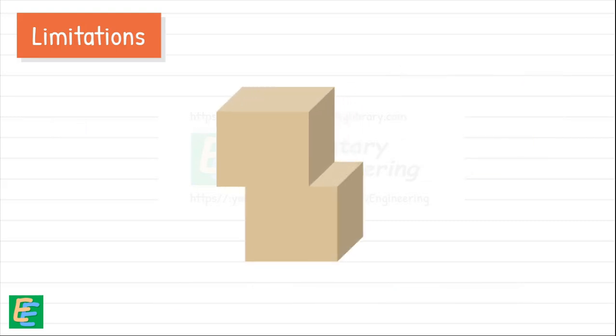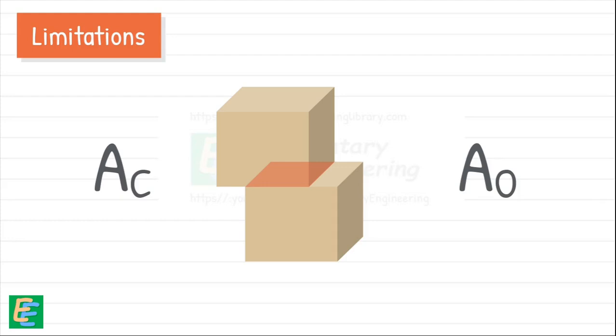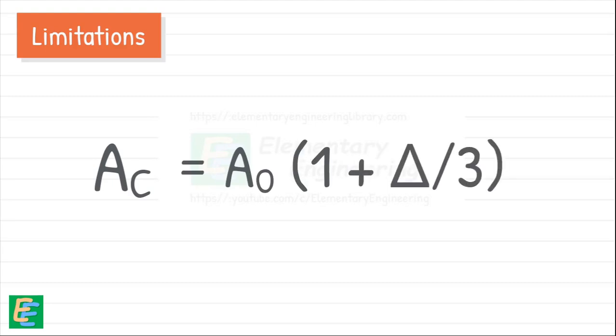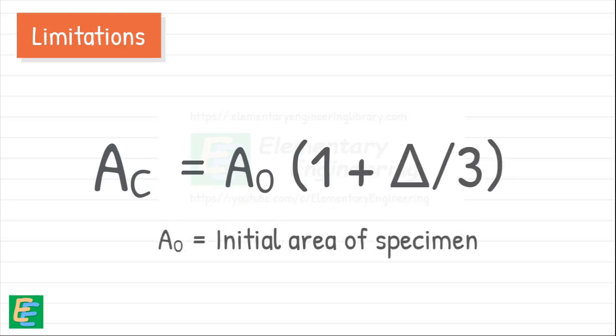Another limitation is that the area under shear gradually decreases as the test progresses. Determining the exact corrected area is challenging, so we typically use the original area for calculating stresses. However, if we do use the corrected area for a more accurate measure of shear stress, the formula is: A = A₀(1 − δ/L), where A₀ is the initial area of the specimen and δ is the displacement.